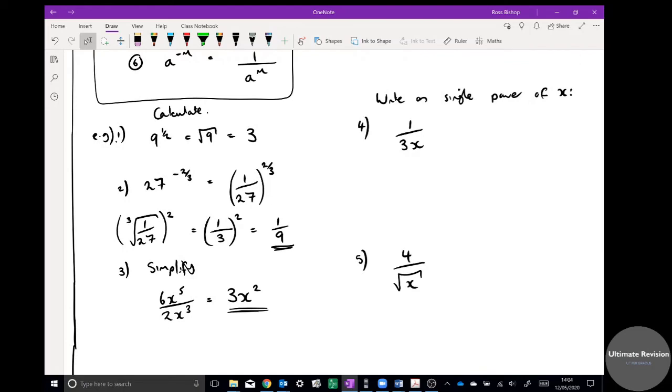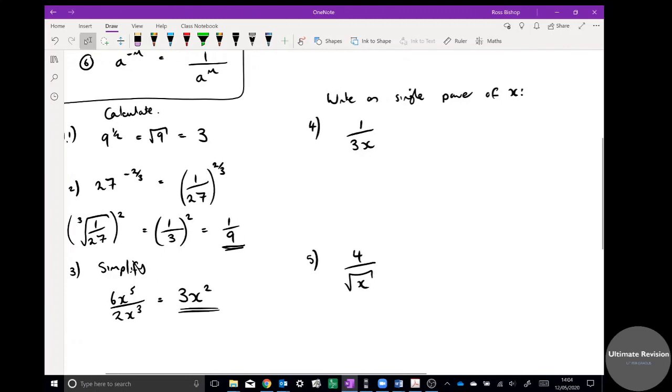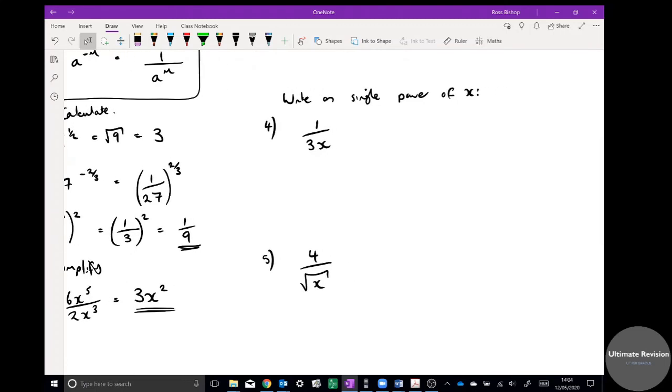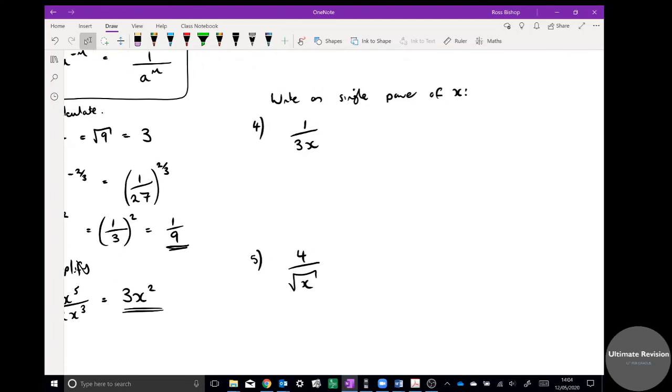Write as a single power of x - that just means x to the power of something. You are allowed a coefficient in front of the x. So what this is - we've got an x on the bottom which I don't want. I'm going to keep the third. That's the same as writing a third because it's one over x. It's the same as doing a third times one over x, and one over x is the same as x to the minus one. So my answer here would be a third x to the minus one.